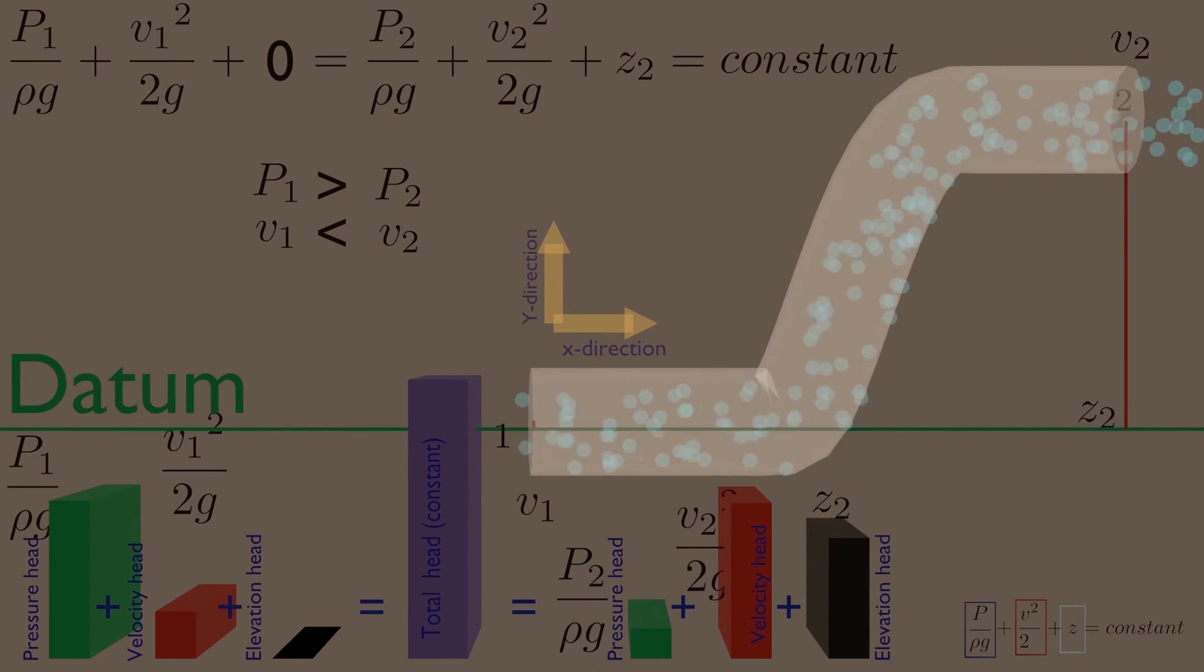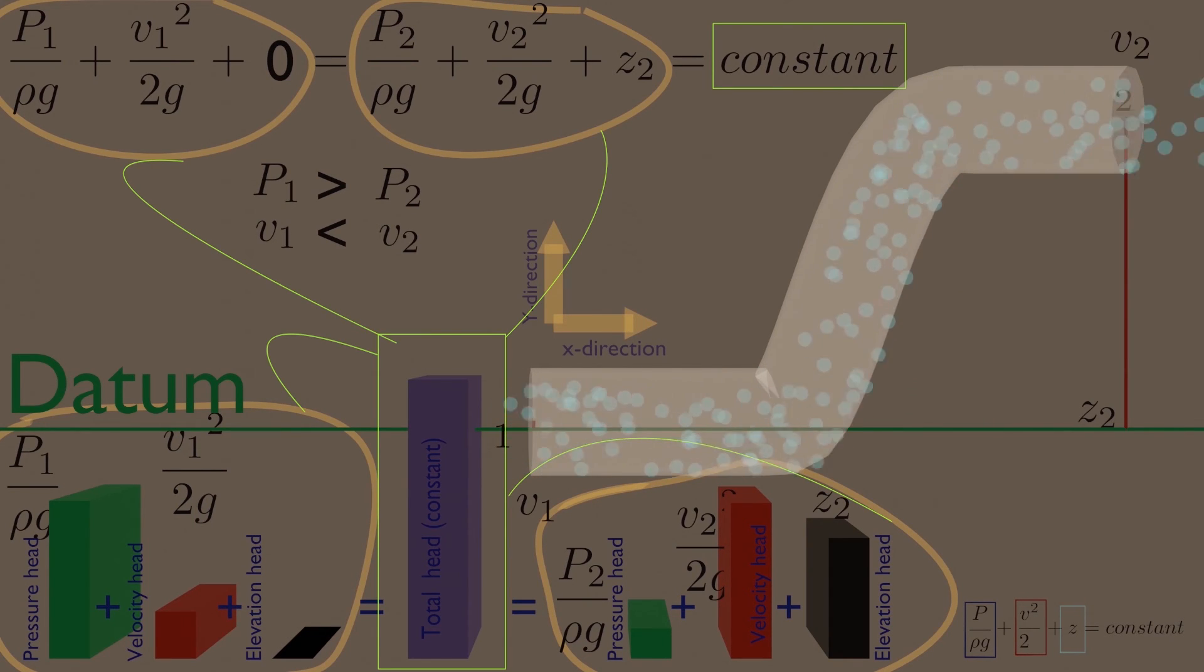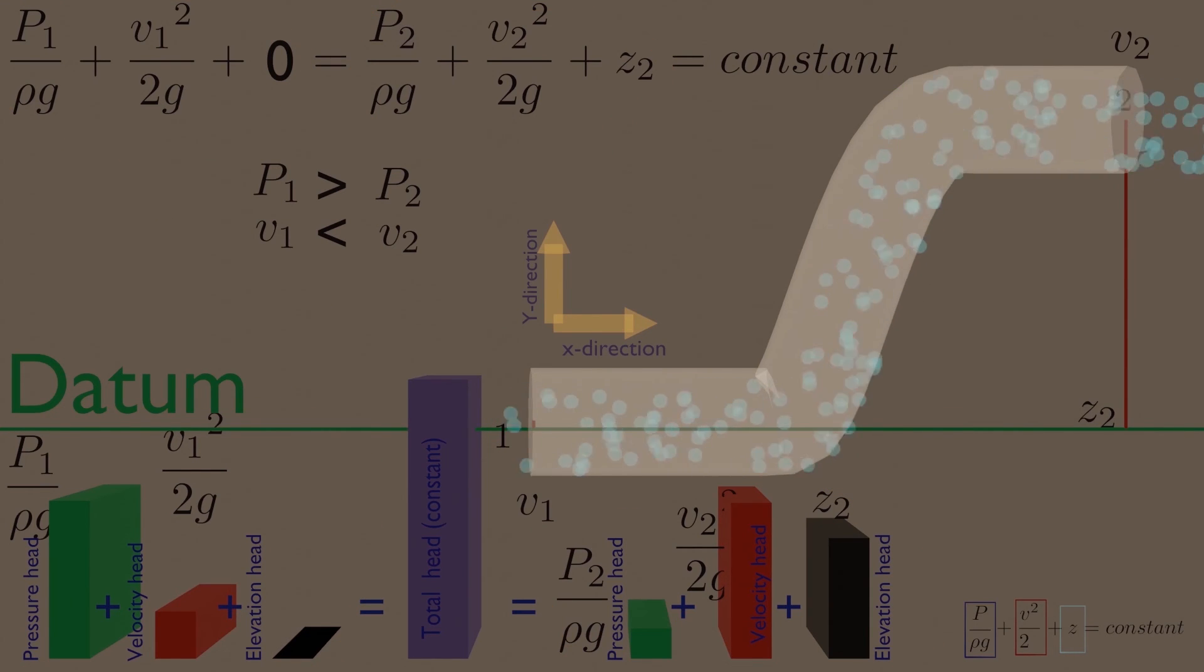Did you notice, the whole Bernoulli's energy, that is total head for the flow, remains constant. And if you sum up every head of left or right equations, you will always end up with total head, no matter which point you choose.